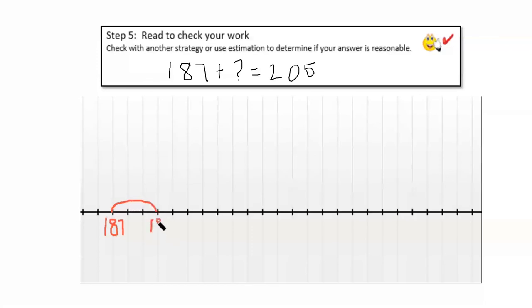So, I can start on my number line at 187, which is a nice friendly number. So, I've added three to get to 190. Now, I'm going to jump to 200 because that's only 10 more than 190, and it's less than 205. So, there's plus 10. And now, I just need to add five more to get to my endpoint, 205.